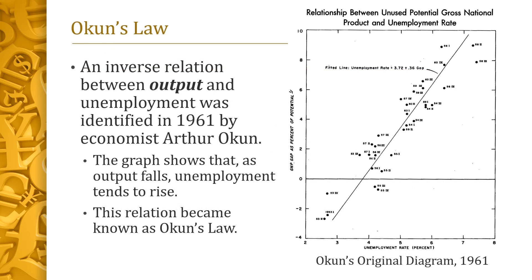At around the same time, American economist Arthur Okun noticed a relation between unemployment and output. Okun's original diagram from 1961 is depicted at right. Unemployment appears on the horizontal axis; points further to the right correspond to times of higher unemployment. The vertical axis is what Okun called the GNP gap. Points that are higher in Okun's graph correspond to times in which output was lower. Hence, the upward sloping relationship means that unemployment tends to be higher when output is lower.